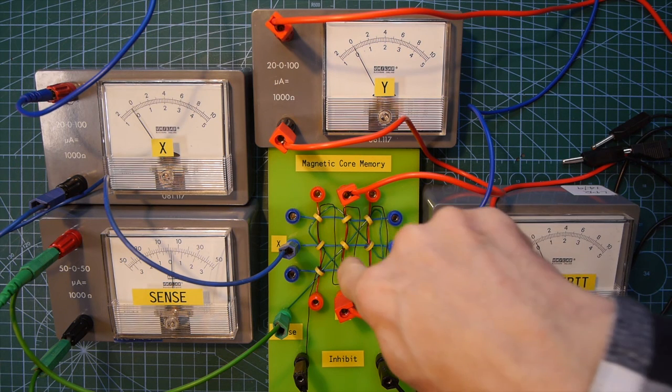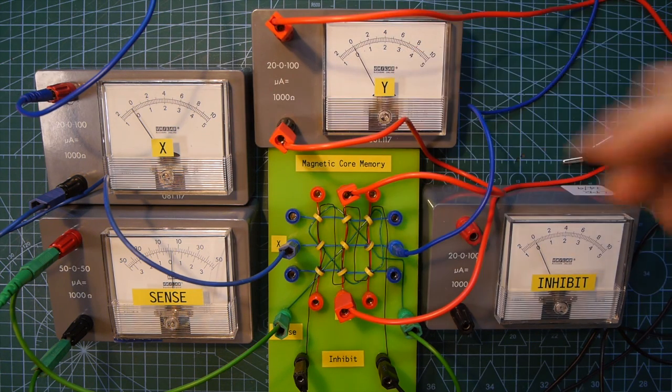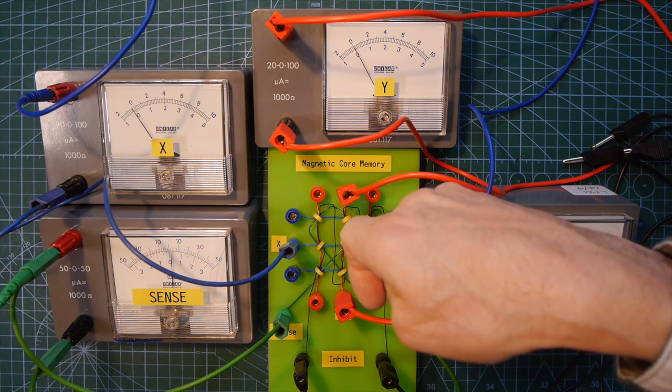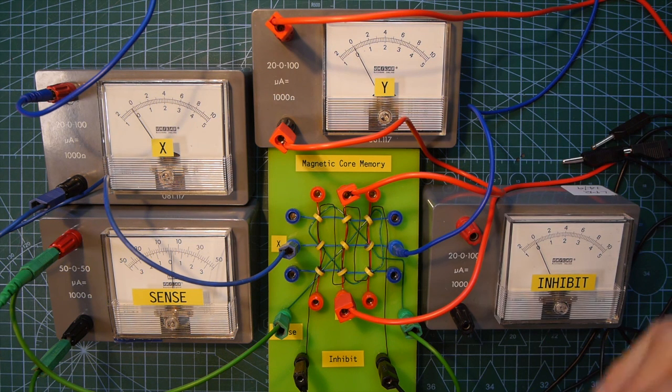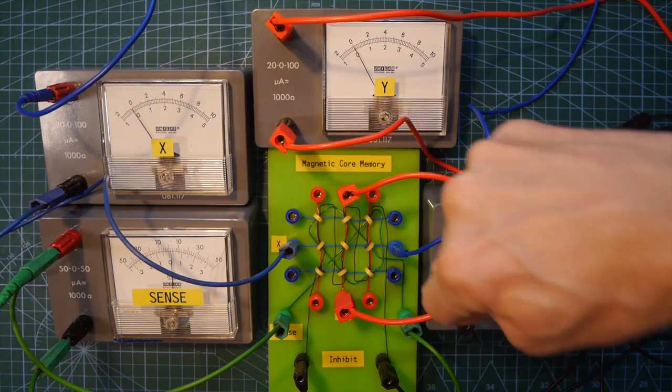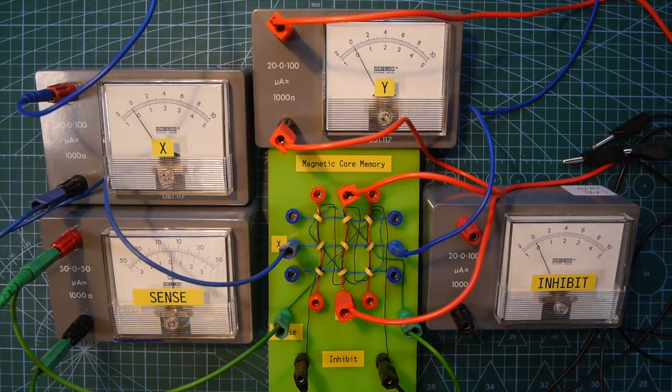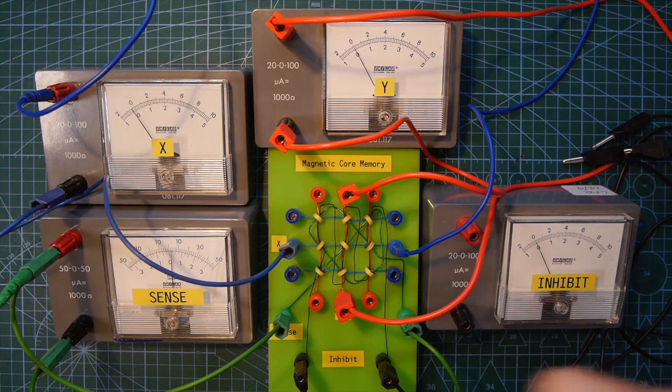So now let's store a one in this central core. Now, to do that, we've got to reverse its magnetism. We're not going to sense that and we're not going to use the inhibit meter. So it's these two you need to watch. But obviously, to create a magnetic field that's in the opposite direction, we need to pass coincident currents through that central core in the opposite direction to when we write a zero. So what we're going to do is we're going to pass currents up through that core and towards the right. So watch the two meters. The currents are obviously in the opposite direction. So when we magnetize that core, there you go. There are currents in the opposite direction and that will have stored a one in that little central core.